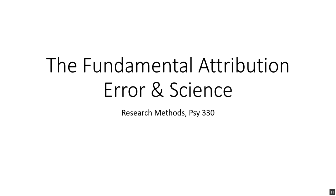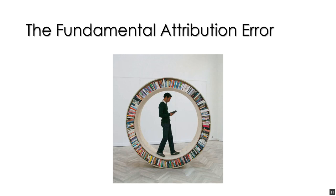Welcome to our first pre-class video lecture on the fundamental attribution error and science in this research methods class. Research methods is generally described as being a process class, not a content class. It's a very different class from what you've been taking — content-based classes like abnormal psychology, social psychology, or physiological psychology. Research methods is a course about doing psychology; it's not about any topic or content area. It's mainly information to be applied, and people say that research methods is a content-free course.